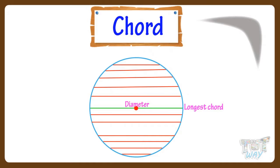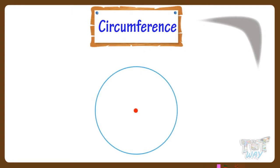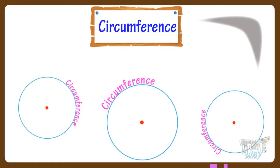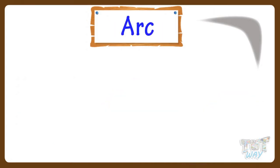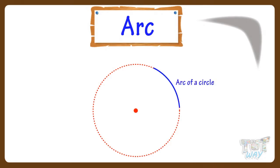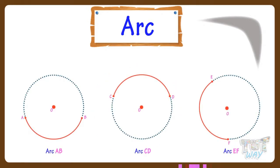Now let's learn what is circumference. Circumference is the boundary of a circle. All these figures are showing the circumference of the circle. Now let's learn what is an arc. Any small or big portion of the circumference is called the arc of the circle. All these figures are representing arcs — some are smaller portions of the circle and some bigger portions, but all are arcs of different sizes.